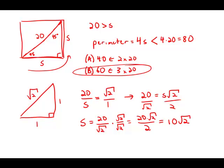And so 10 root 2, we know that the square root of 2 is more than 1 and less than 2. And so that means that the side has to be more than 10 and less than 20.